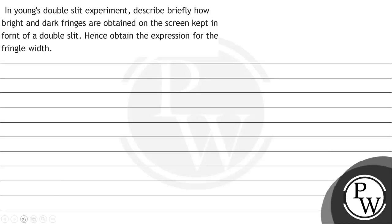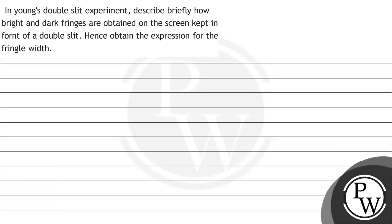Hello! Let's read the question. The question says: in Young's double slit experiment, describe briefly how bright and dark fringes are obtained on the screen kept in front of the double slit. Hence, obtain the expression for fringe width.